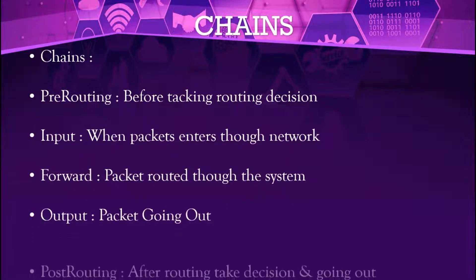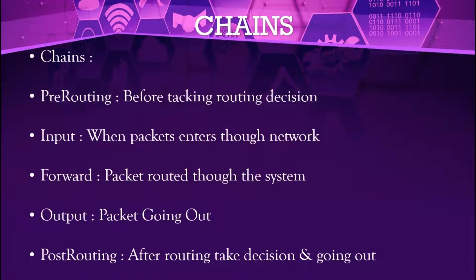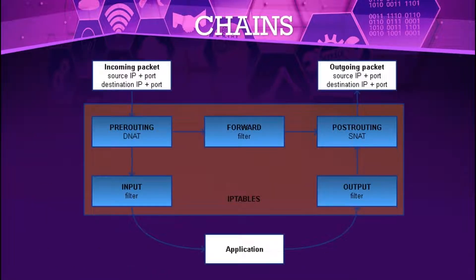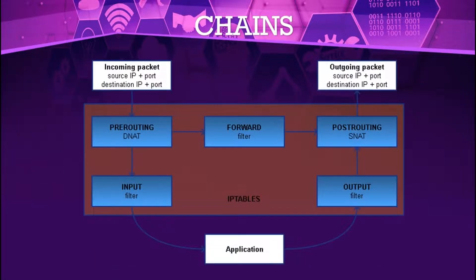Chains have five options: pre-routing, input, forward, output, and post-routing. Pre-routing means the router makes a decision before the packet arrives — it determines where the package needs to be stored or sent. Input means the package has been delivered to the server.